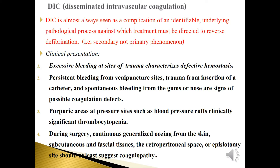Purpuric areas and pressure sites such as blood pressure cuffs are clinically significant signs of thrombocytopenia. During surgery, continuous generalized oozing from the skin, subcutaneous and fascial tissues, the retroperitoneal space, or episiotomy site should suggest coagulopathy.